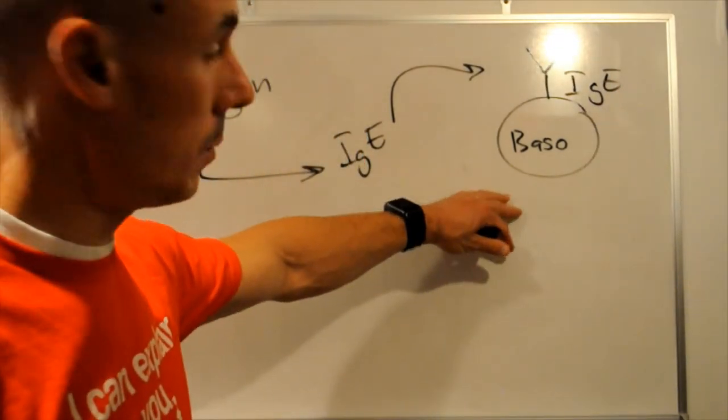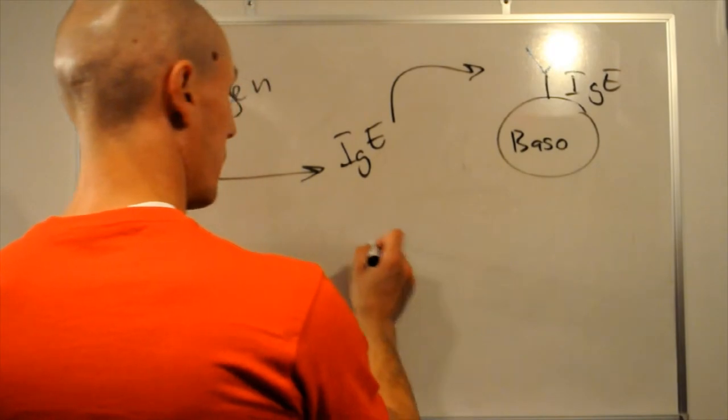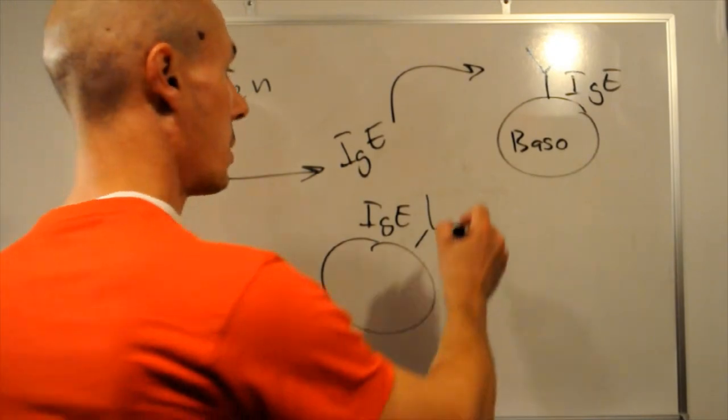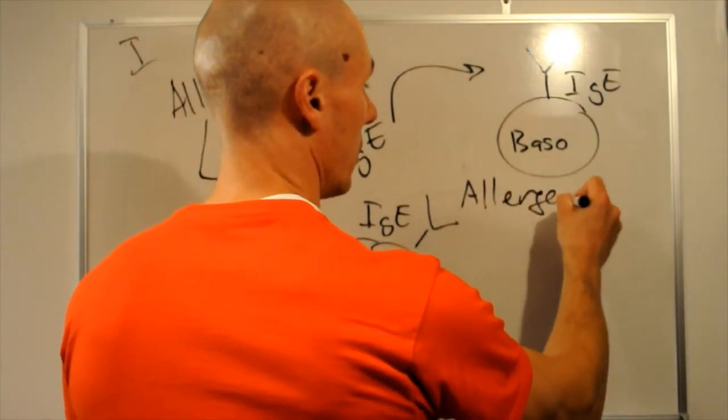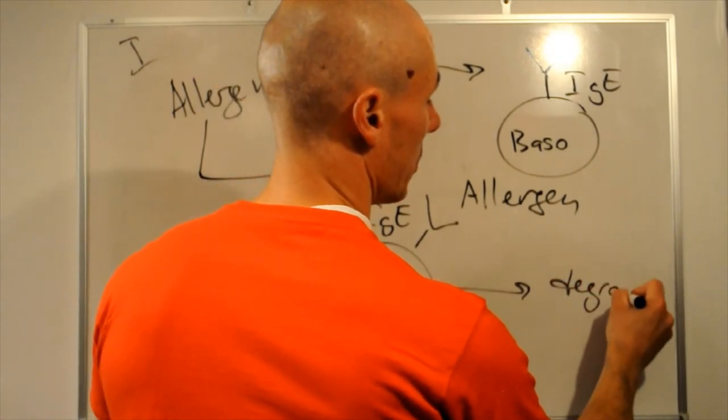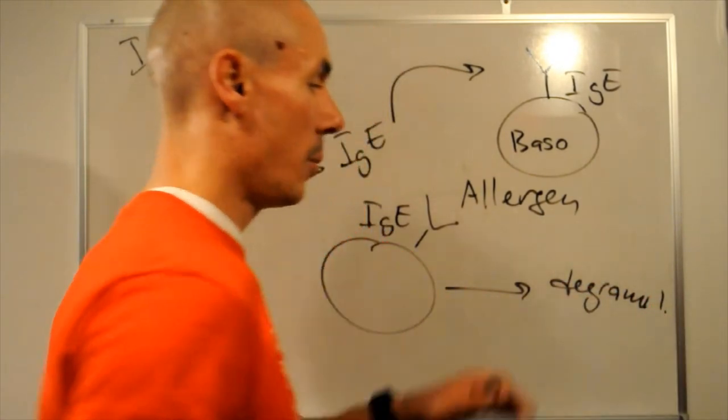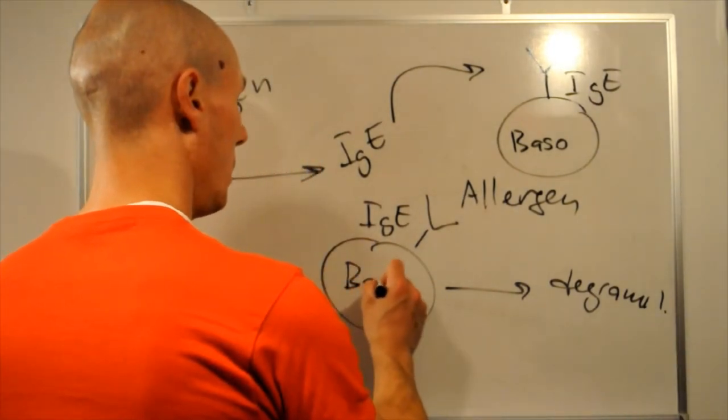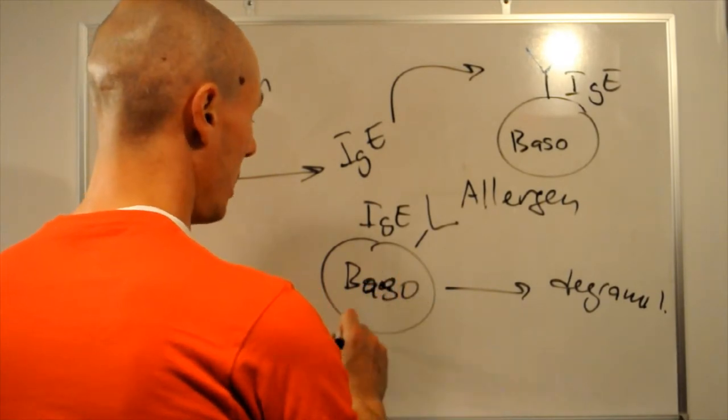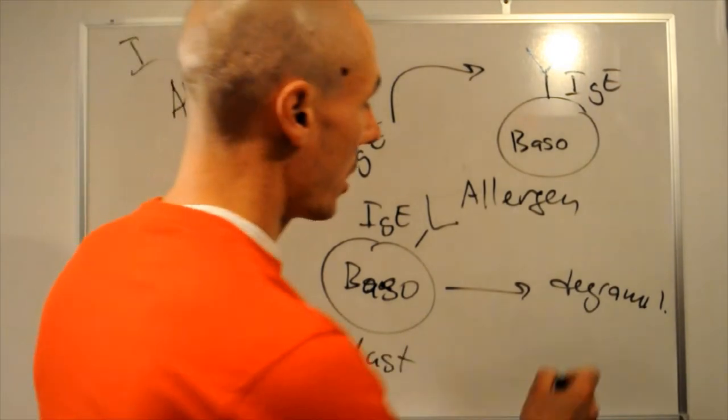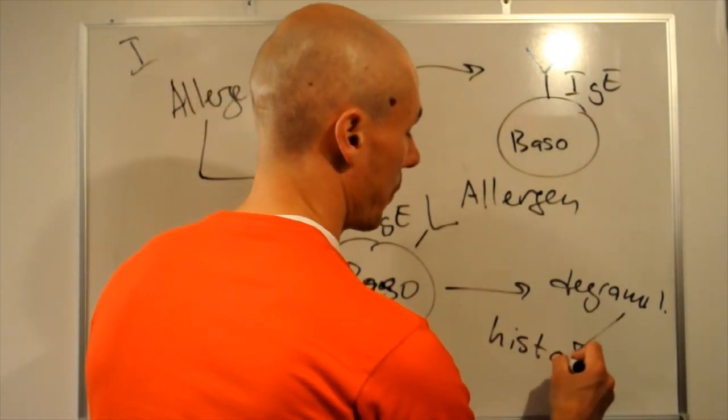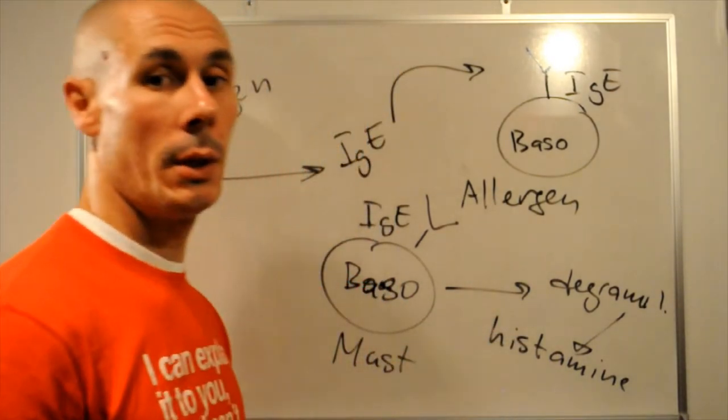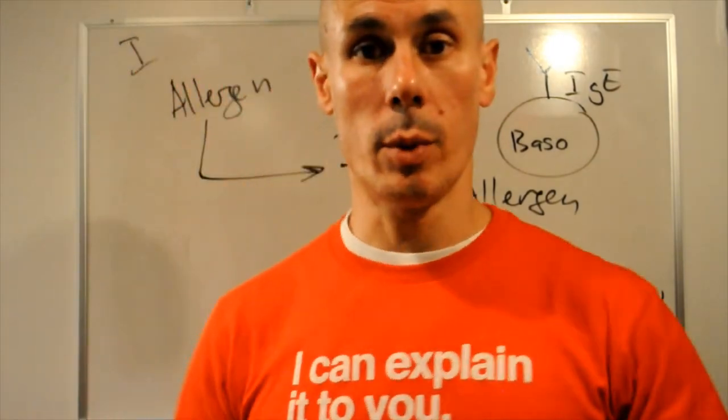And then, next time, that basophil with IgE on its surface is exposed to the allergen that leads to degranulation of the basophil. And degranulation essentially is the release of the histamine. It can be a basophil or it can be a mast cell. The point is degranulation, release of histamine. And histamine will induce all those typical allergic reactions that all of us are very well aware of.